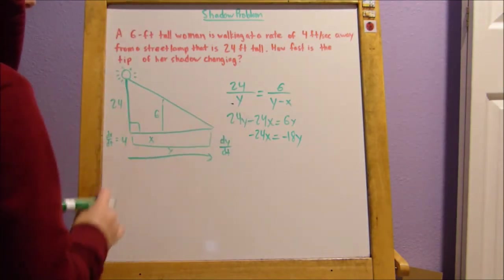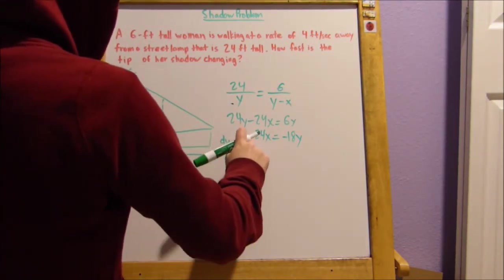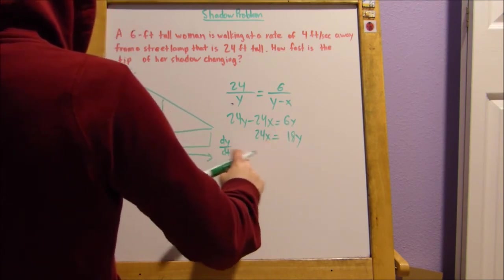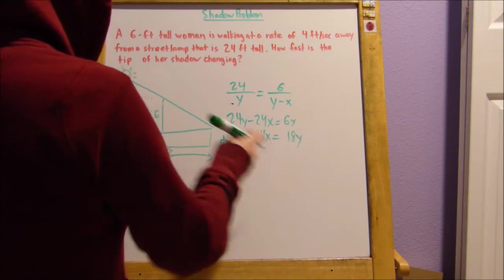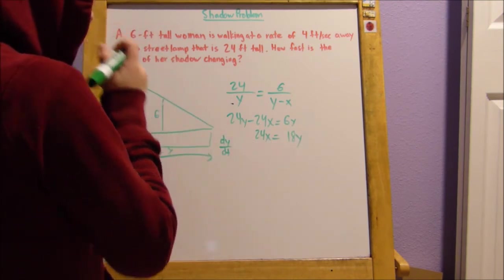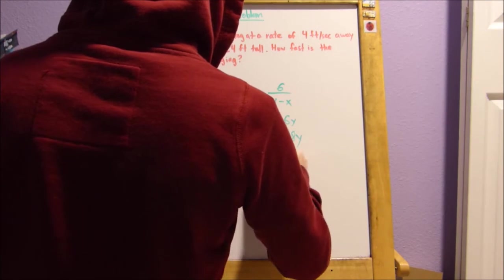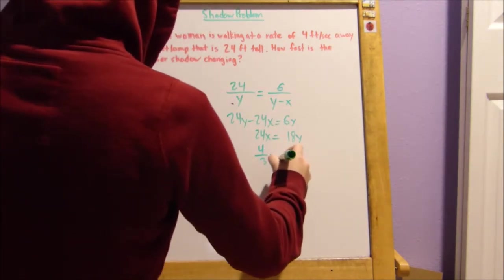Now, we can just make both sides positive by dividing by negative 1. So, next what we're going to do is we're going to divide by 18 to isolate our y. So, that's going to be 4 thirds x equals y.